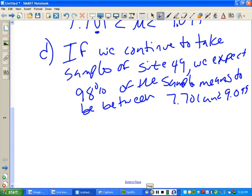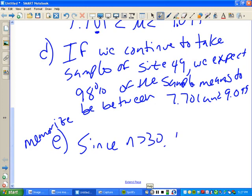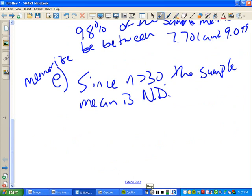Your assumptions in this case, these you have to memorize. Since n is greater than 30, the sample mean is normally distributed. All right. Any questions on that?